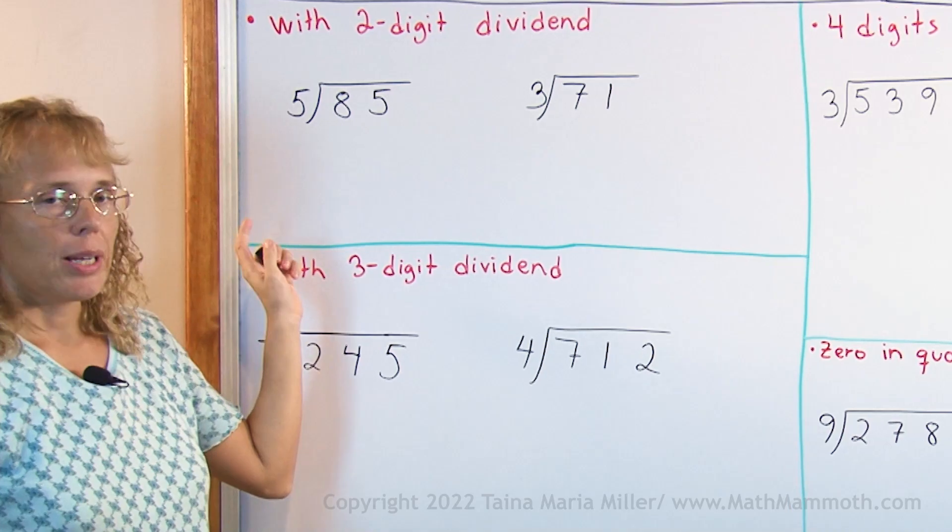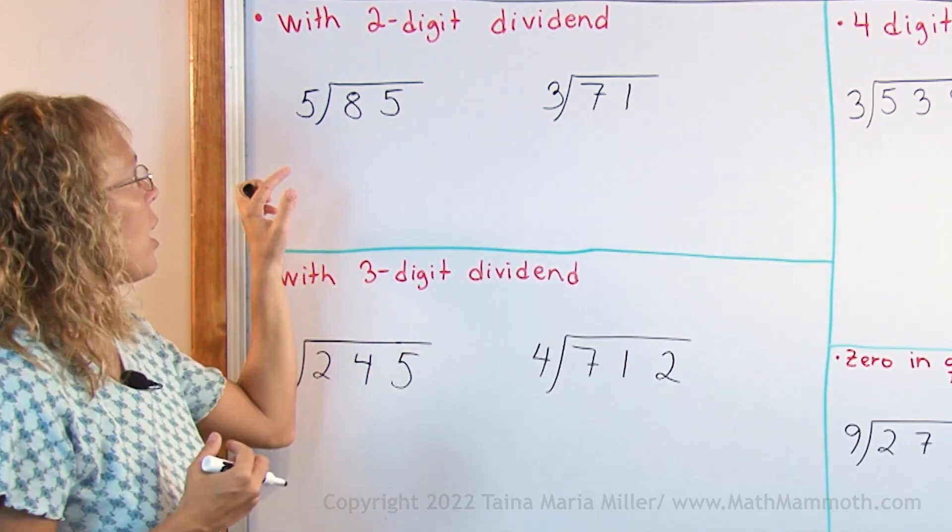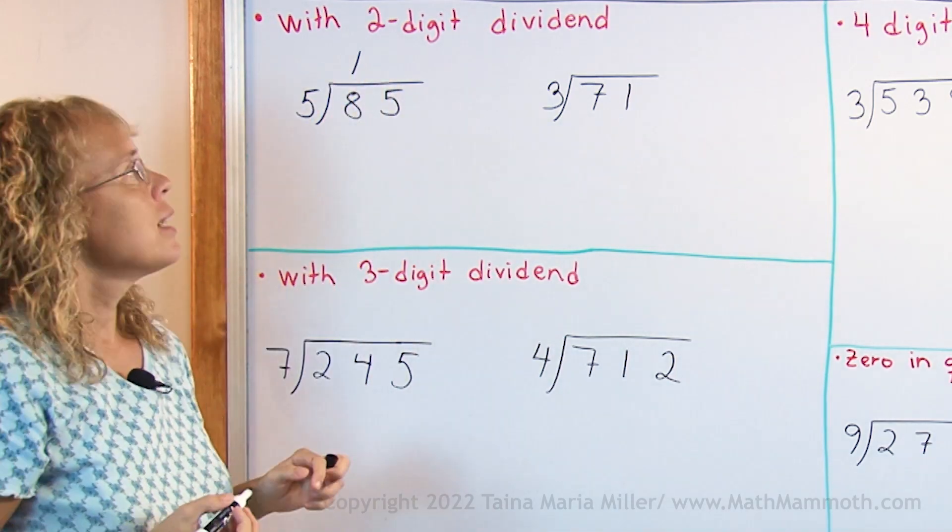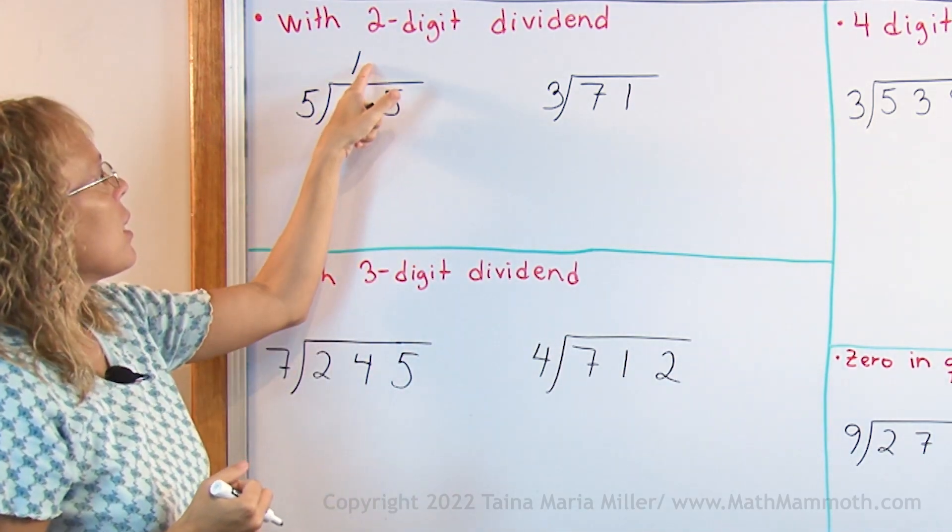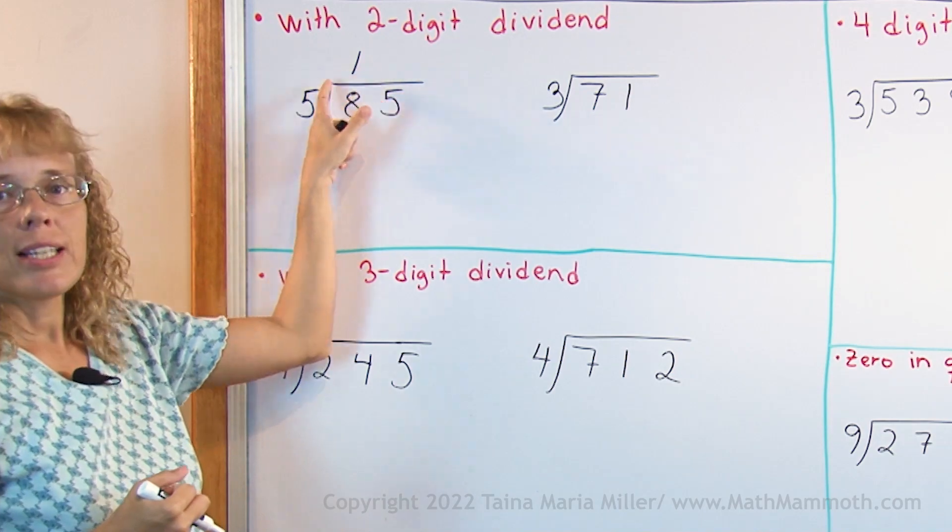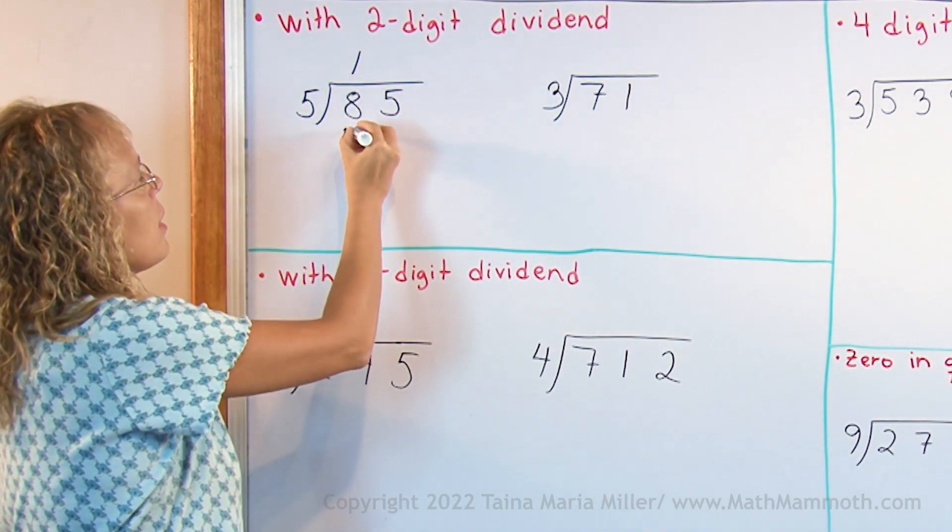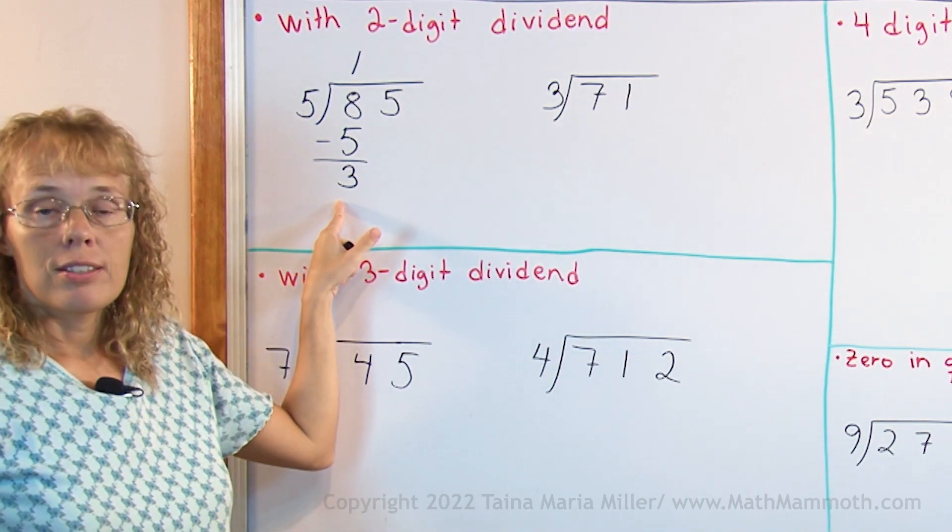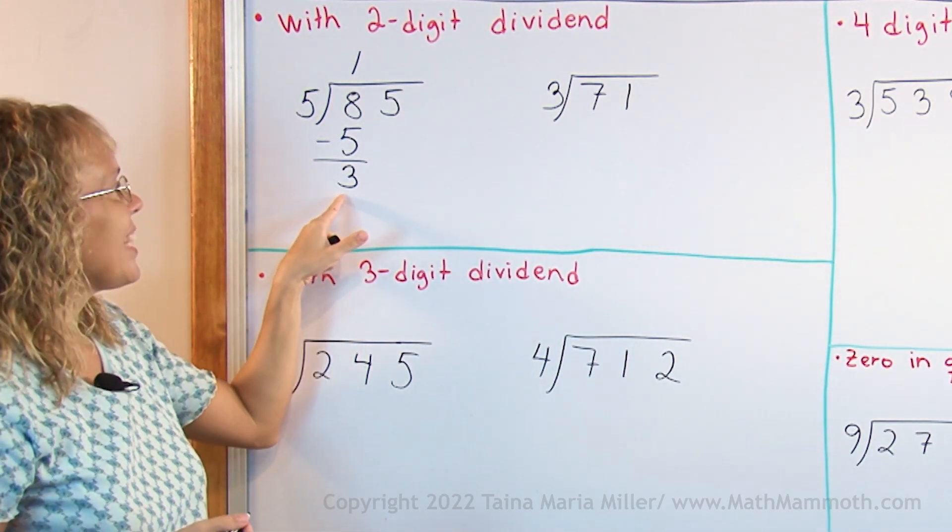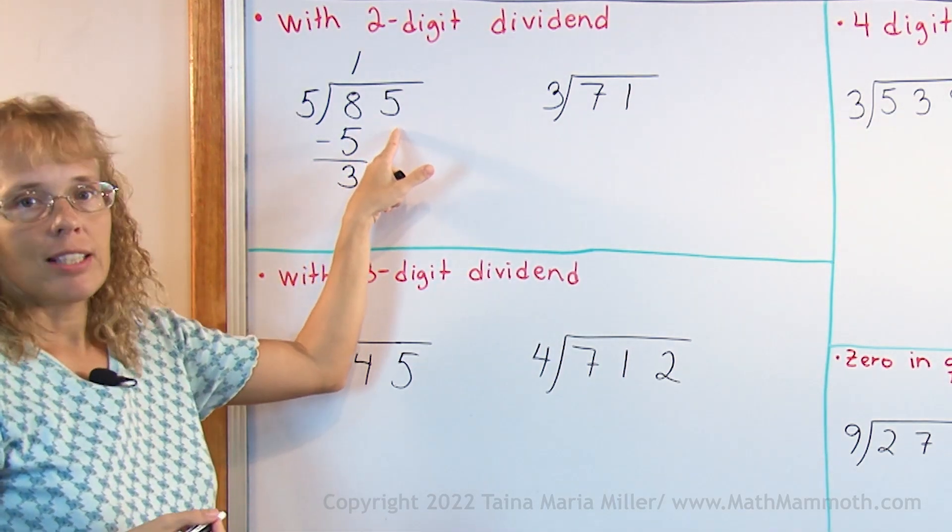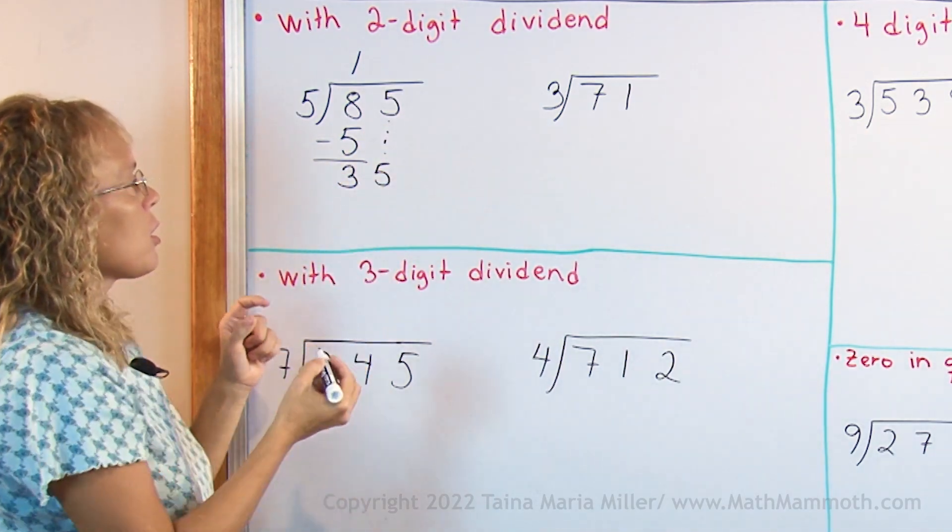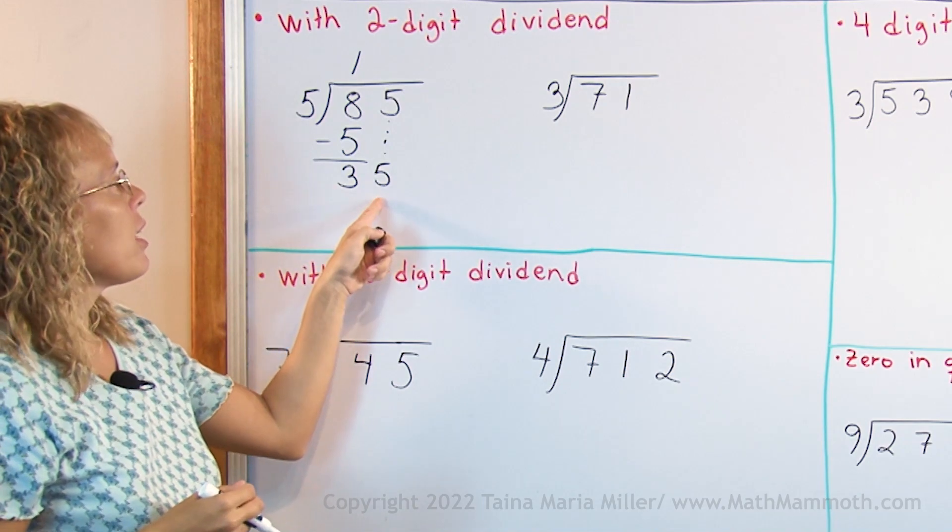We think this way. How many times does 5 go into 8? One time. We write it here in the tenth place in the answer. And then we multiply 1 times 5 is 5, and subtract 3 to find the remainder in the tenths. 3 tenths. Then we add to that the 5, or drop down the digits, so to speak. So we get 35.